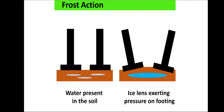Frost action: wherever there is a soil strata, there will be some moisture inside the soil. This moisture is not dangerous in liquid form, but in cold or snowy countries, this moisture collectively expands into ice, forming an ice lens. This ice lens or ice bulb puts a large amount of stress onto the structure's footing, causing differential settlement or disturbance to the foundation.